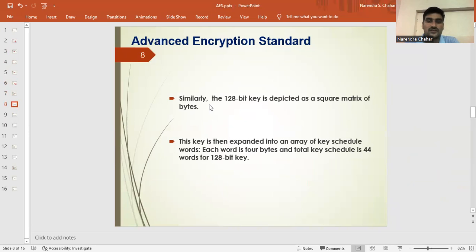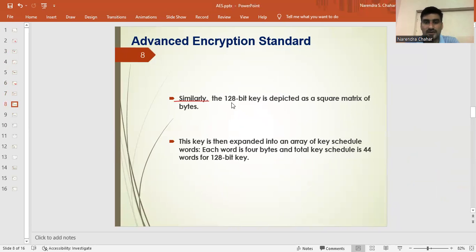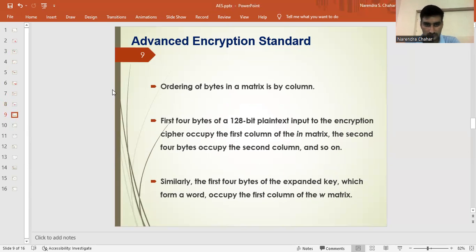Similarly, here we are talking about the block which is to be encrypted. The 128-bit key is depicted as square matrix of bytes. The key is then expanded into array of key schedule words. Each word is of 4 bytes and total key schedule is 44 words for a 128-bit key. These 4 bytes are reserved here. This is the 48 completely.